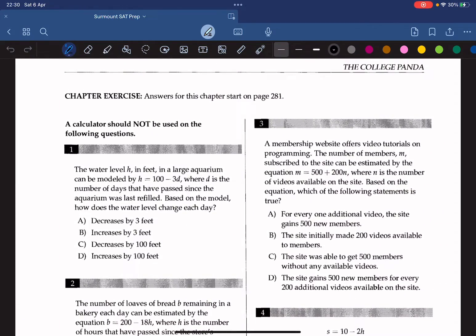Question one: the water level h in feet in a large aquarium can be modeled by h equals 100 minus 3d, where d is the number of days that have passed since the aquarium was last refueled. Based on the model, how does the water level change each day? We know that the slope here is negative 3, so it decreases 3 feet per day, so the answer should be A.